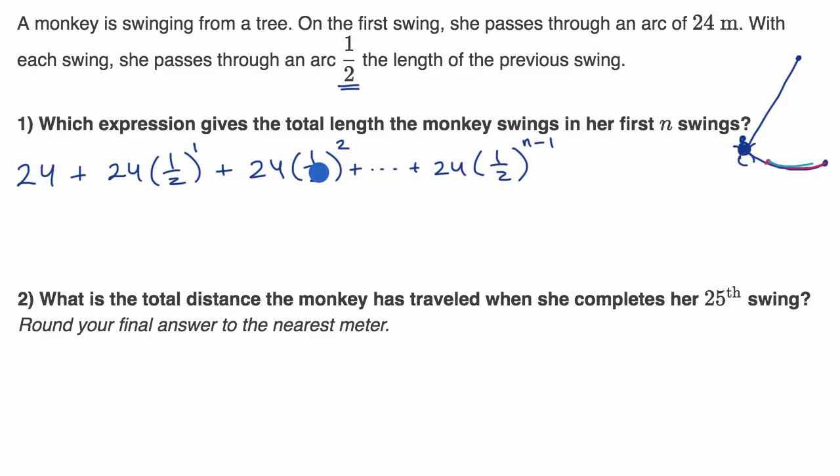So that tells us, the sum of first N terms is A, where A is the first term, so that's going to be our 24 in this situation. It's A minus A times our common ratio. I already said that our common ratio is 1 half, to the Nth power.